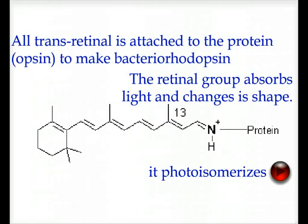In bacteriorhodopsin, an all trans-retinal group is attached to the protein, an opsin, to make bacteriorhodopsin. The retinal group absorbs light and when it does it changes its shape. It undergoes what's known as a photoisomerization.